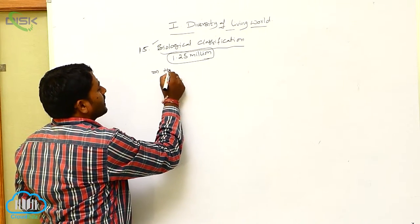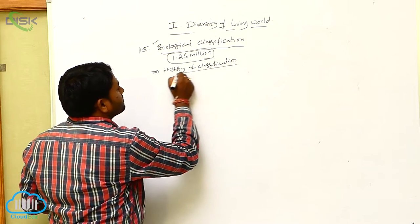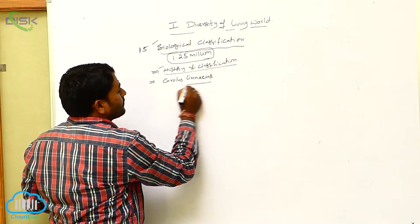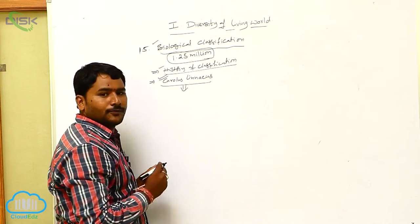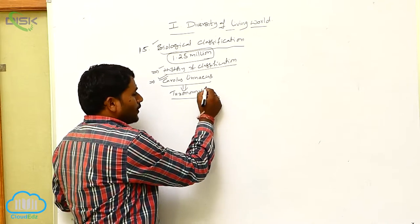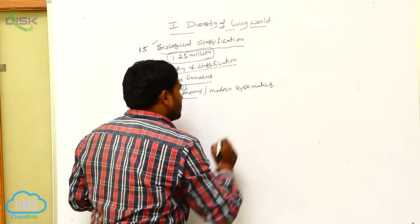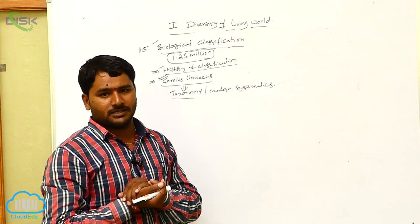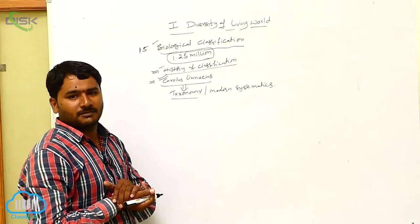In the history of classification, Carolus Linnaeus is considered as the father of taxonomy as well as the founder of modern systematics, because Linnaeus was the first scientist who started the classification process.